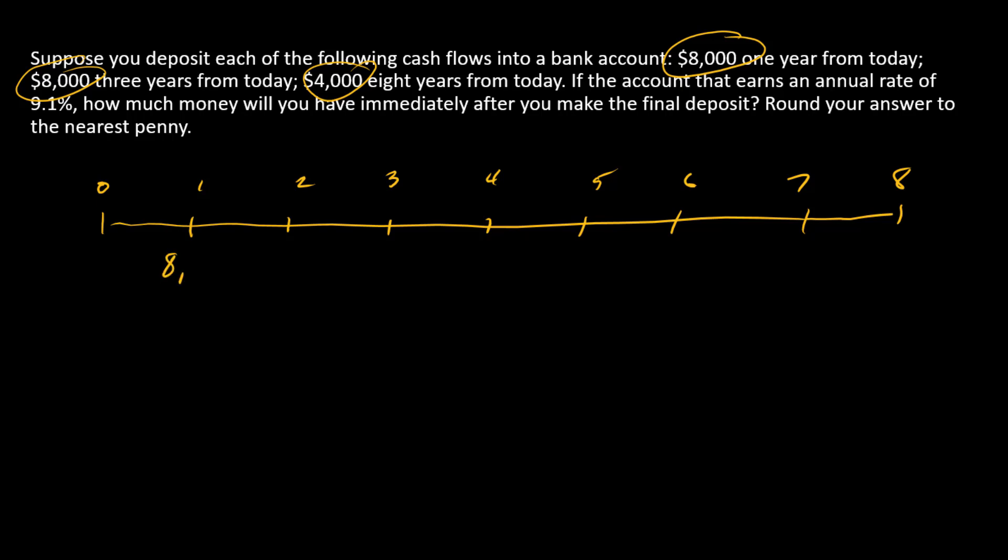We've got the first one of 8,000 in year one. There's another one of 8,000 in year three, and then there is a third one of 4,000 in year eight.